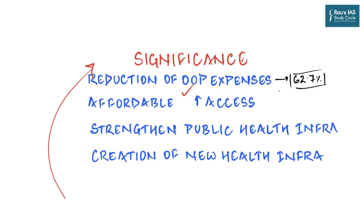Under the scheme, hospitalization expenses up to five lakh rupees are borne by the government, providing major relief on out-of-pocket expenses. Since the scheme has made tertiary health care treatment affordable, it has increased access to health care for the poor. At the same time, it has led to the strengthening of public health infrastructure through infusion of insurance revenues, as earlier government hospitals did not have any significant revenue stream.